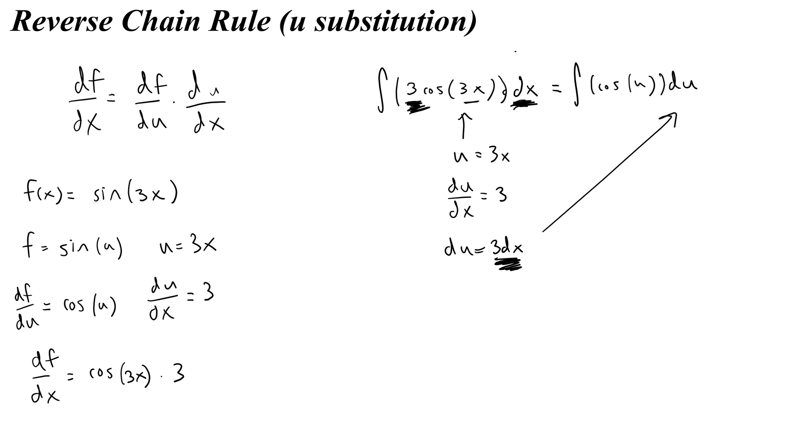Again, I replaced the 3x with u. Well now if I integrate the cosine of u with respect to u, that's just going to give me sine of u. Of course, I'd have to write plus c because I don't necessarily know what the original constant is, or if there's a constant. And when I plug in u, I get sine of 3x plus c.